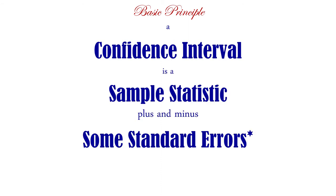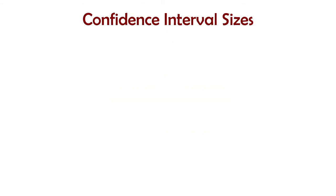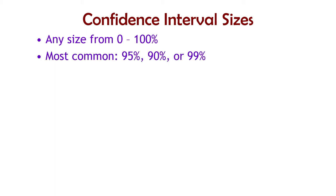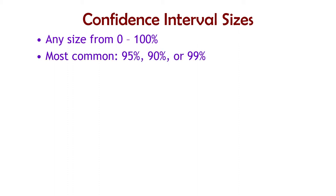Sample confidence intervals are just a sample statistic — usually the mean — plus and minus a certain number of standard errors, just the right number. It could be two standard errors for a rough 95%, or 1.65 for a 90% confidence interval, or 1.96 standard errors for 95%, or 2.58 for a 99%. It's just a sample mean plus or minus a certain number of standard errors, so down and up from the sample mean. We can make confidence intervals any size from 0 to 100%, but the most common are 95%, 90%, and 99%.